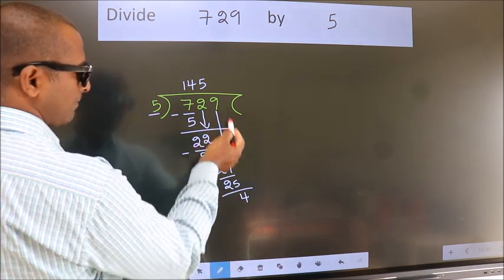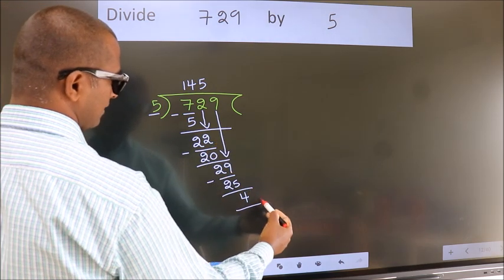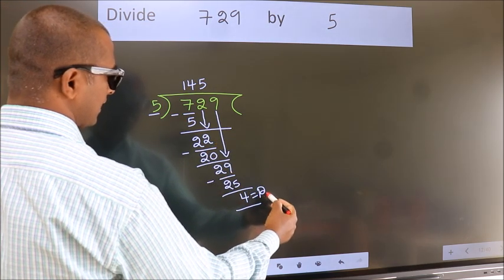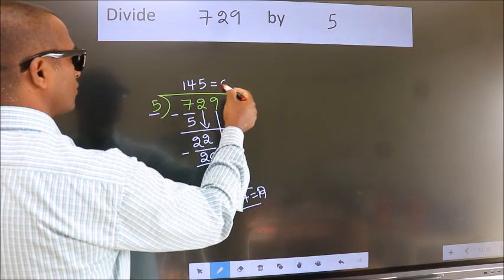No more numbers to bring it down. So, we stop here. This is our remainder. This is our quotient.